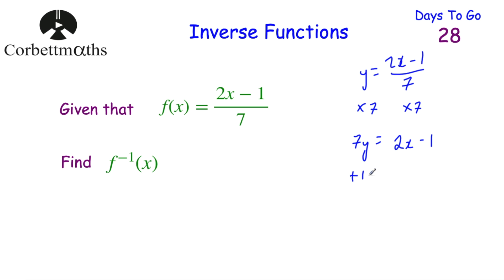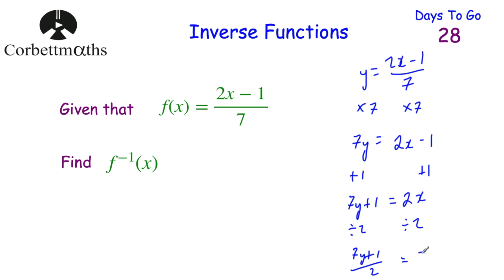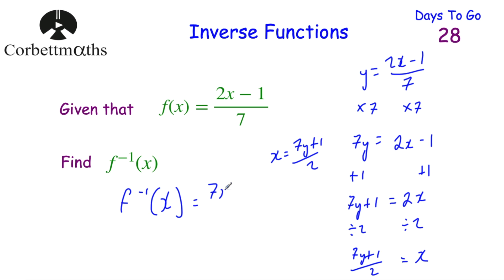We multiply both sides by 7: 7y = 2x − 1. Then add 1 to both sides: 7y + 1 = 2x. Finally divide by 2: (7y + 1)/2 = x. Turning that around: x = (7y + 1)/2. So the inverse function f⁻¹(x) = (7x + 1)/2.